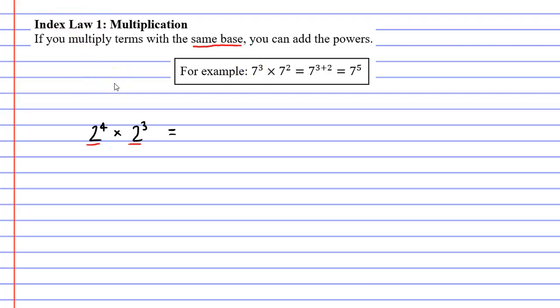I'm going to show you why. What is 2 to the power of 4? Well, that's 2 times 2 times 2 times 2. It means multiply 2 four times. What is 2 to the power of 3? This is 2 times 2 times 2. I multiply 2 three times.